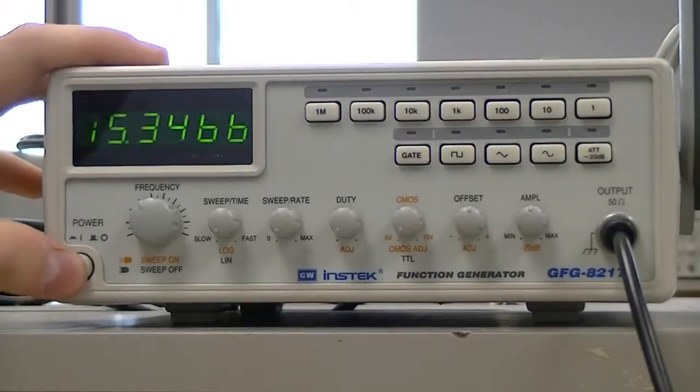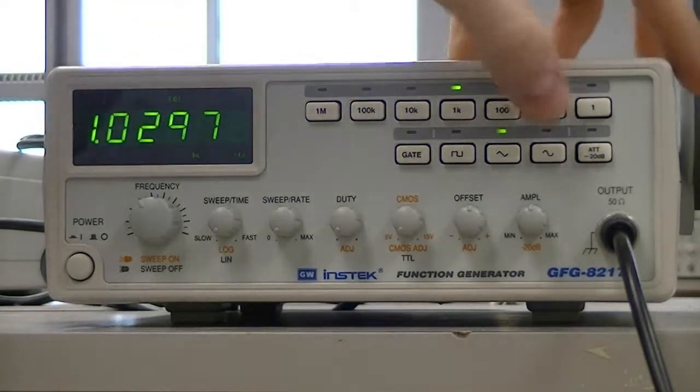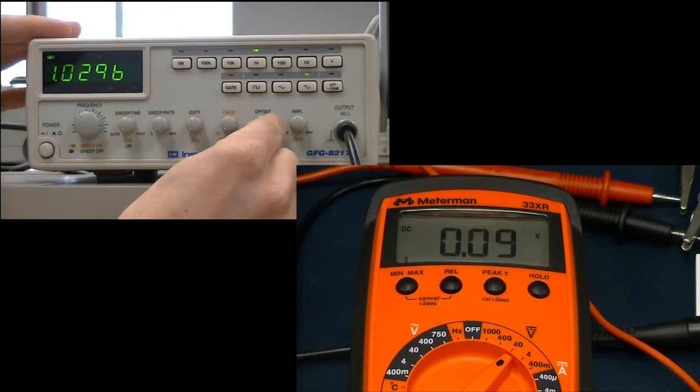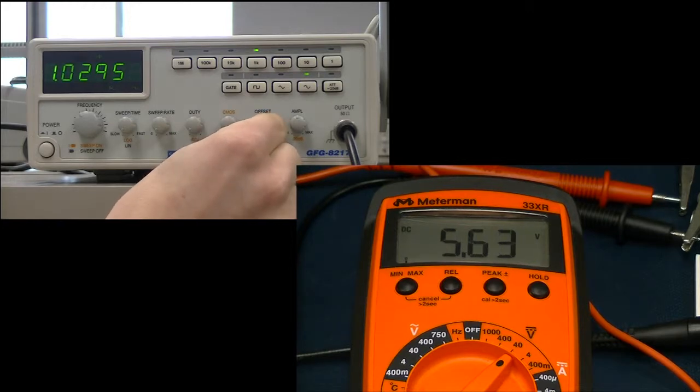Now back to the function generator when we're going to throw some AC and DC in. Turn it to a sinusoidal wave. And the offset here is a nice function. Now I'm looking at the digital multimeter when I do this, and I can tell how much it has.